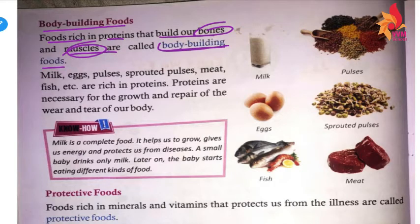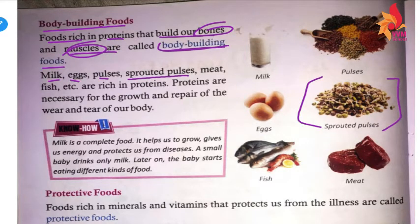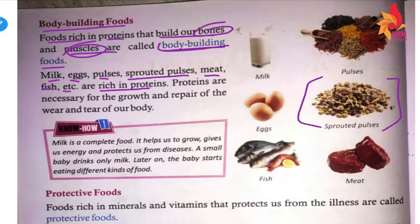Sources of bodybuilding foods include milk, eggs, pulses, and sprouted pulses. Sprouts are formed when you keep pulses in wet cloth. Meat and fish are also rich in proteins.